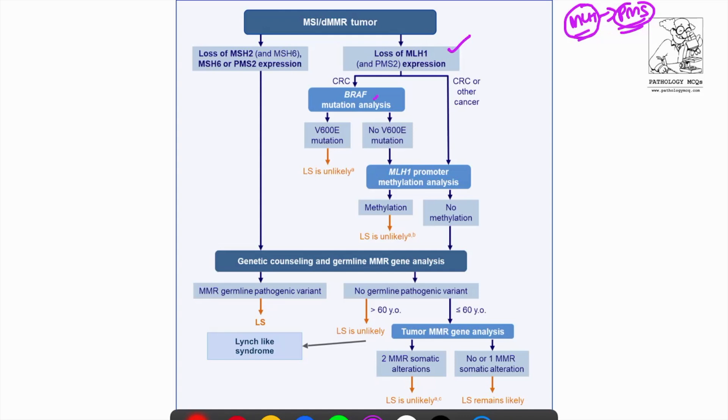If you see BRAF mutation, then Lynch syndrome is unlikely. Lynch syndrome is a hereditary syndrome. It's a hereditary non-polyposis colorectal carcinoma syndrome. In this syndrome, usually you have any of the germline mutant genes in either MSH2 or PMS2 or even you might have MSH6.